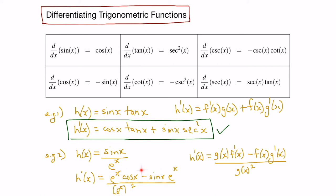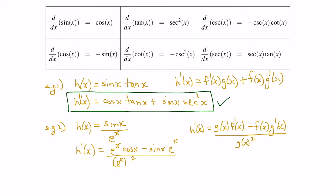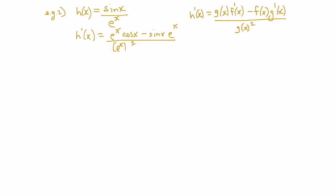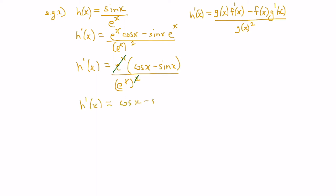Now this is an answer — the calculus is done — but we can simplify. Both top terms have an e to the x in them, as does the bottom. So let's factor out an e to the x at the top, which leaves us with e to the x times (cos x minus sine x), all over e to the x squared. We can then cancel an e to the x from top and bottom using laws of exponents, giving us cos x minus sine x, all divided by e to the x. That is our simplified answer.